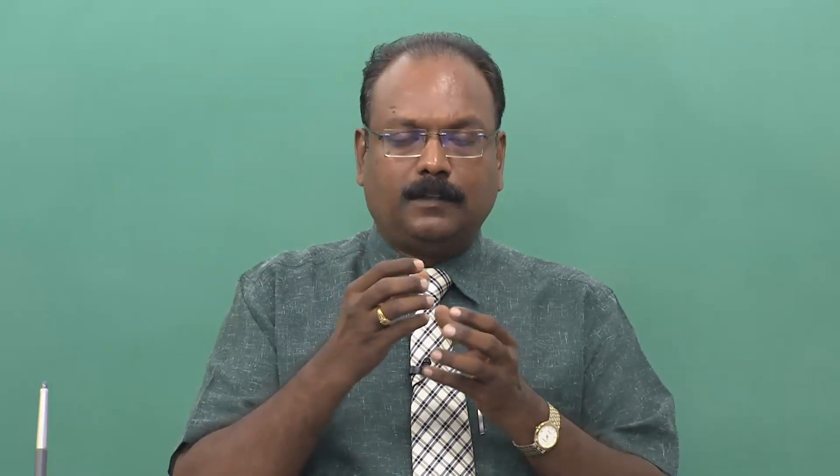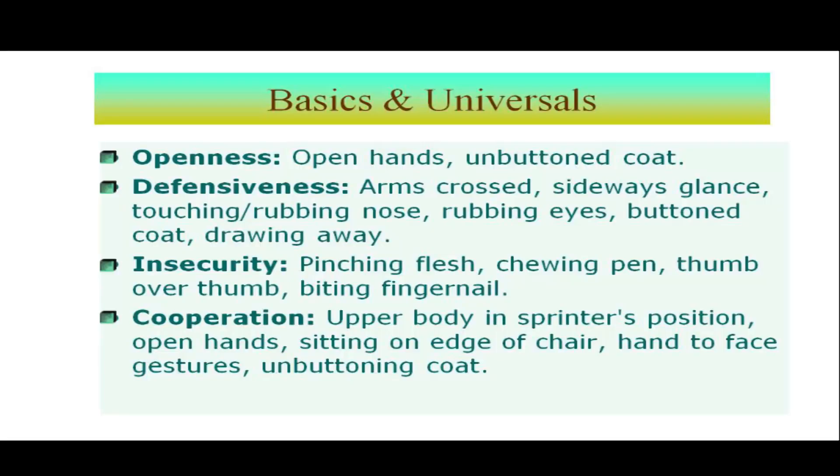But the opposite — cooperation: how do you understand that somebody is willing to cooperate with you? The upper body in a sprinter's position — slightly inclined towards the other person — shows the person is interested, as opposed to withdrawal. The more you lean back, the more you are indifferent, laid back, and not interested in conversation. Sitting erect is somewhat neutral, but a slight leaning towards the person in front indicates you are interested in the conversation and interested in talking to the person.